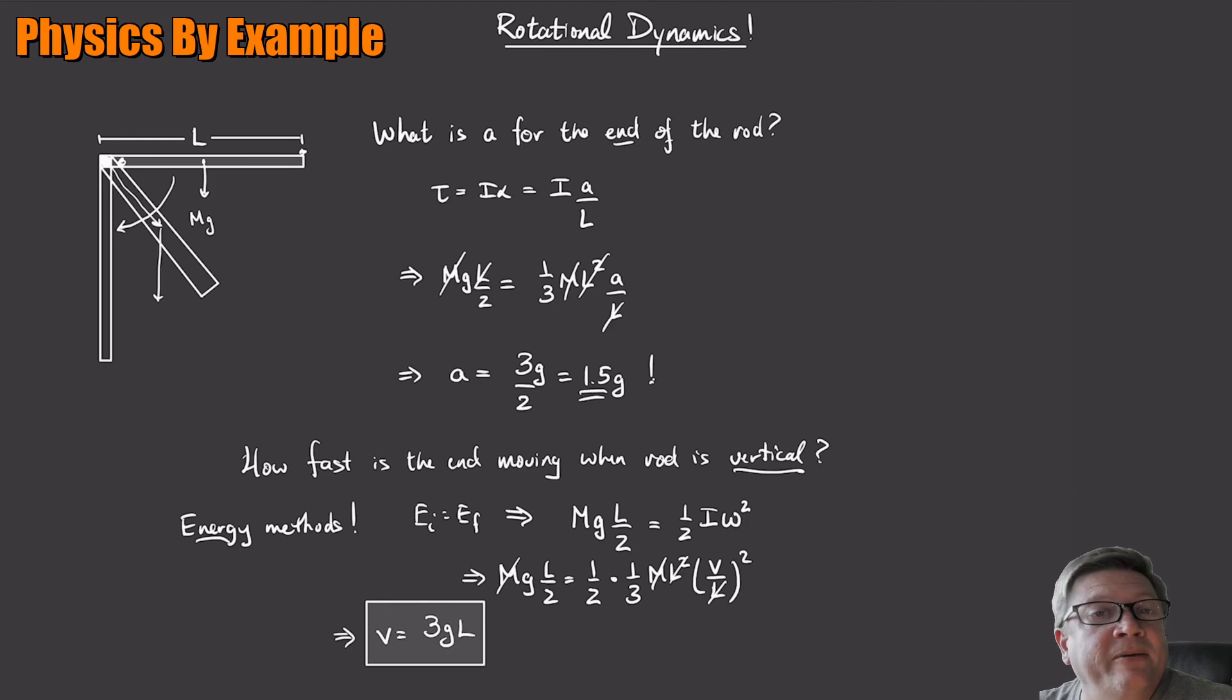That's faster, by the way, than if it was undergoing free fall from a height L, because free fall, remember, from a long time ago, that was root 2GH, 2G times the initial height. So it's going to be falling faster, which is what we maybe would think if it initially starts accelerating faster than gravity. Cool. So this is kind of a cool problem.